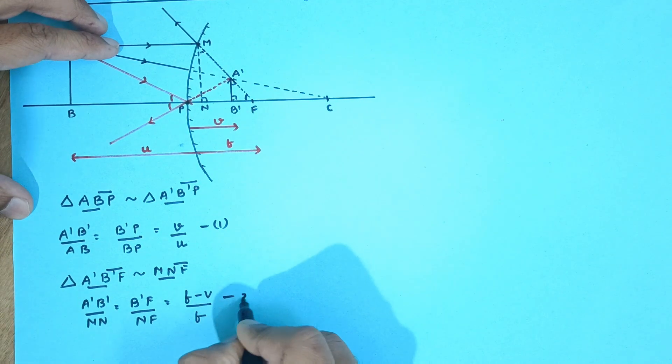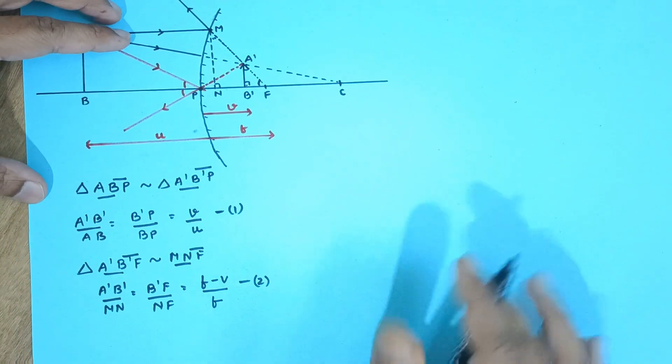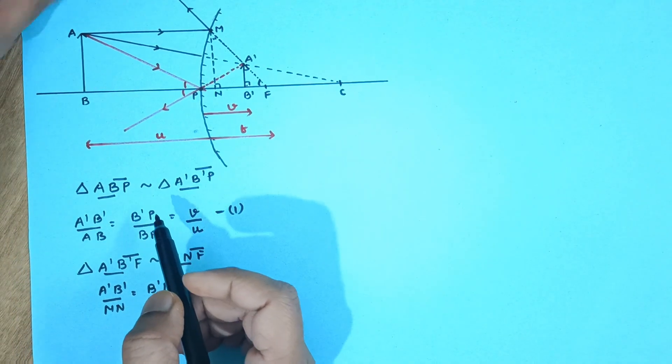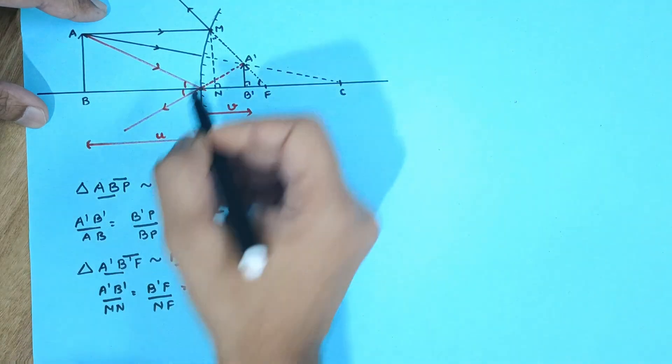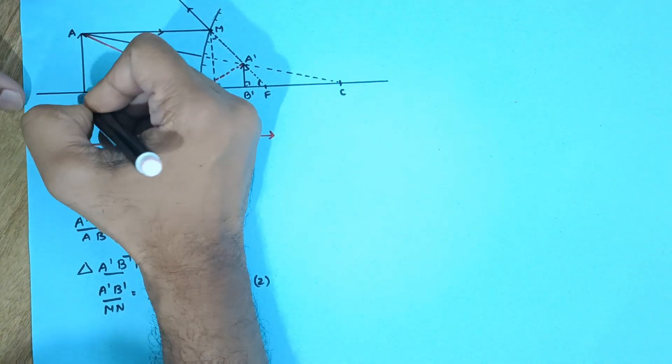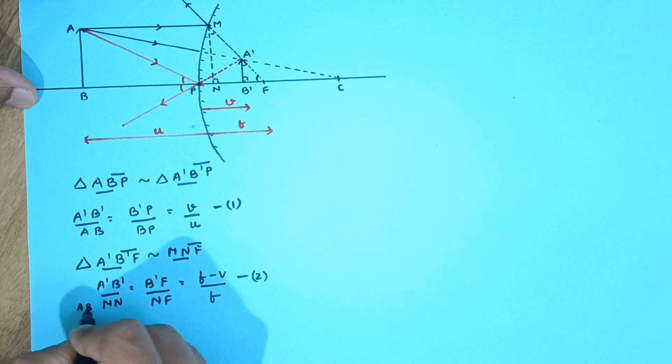Now this is our equation number two. From this side, you can see that this is A'B' upon AB and here Mn and AB are one and the same. So I can replace this by AB.